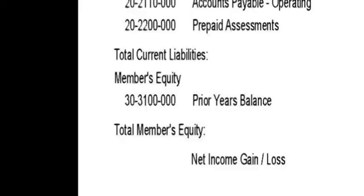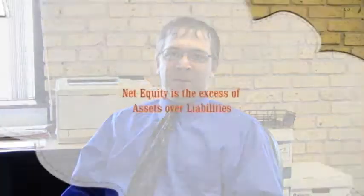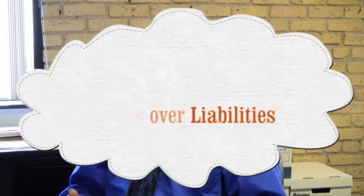Board members are often confused about what exactly members' equity is. This is the section at the bottom of the balance sheet and it gives the net worth of the association's fund that the balance sheet is reporting on. The basic way to calculate it is: you take your assets minus your liabilities, and this is the equity built up in your association. Depending on your asset structure, it could be cash or it could be tied up in receivables or any other asset on your balance sheet.